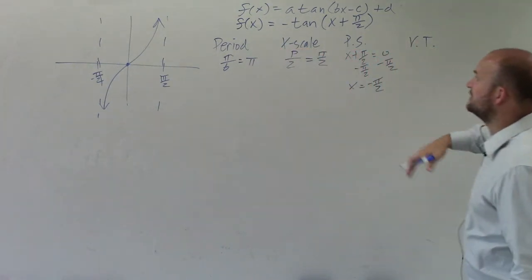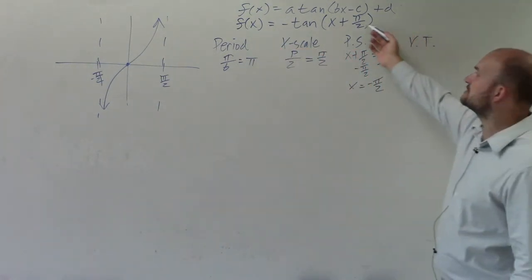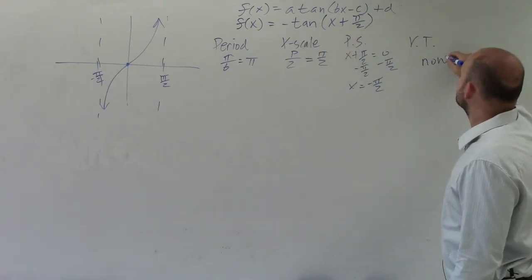And our vertical translation is going to be d, what we're going to be shifting up or down. But you can see in this equation, we're not shifting up or down at all. So that's going to be none.